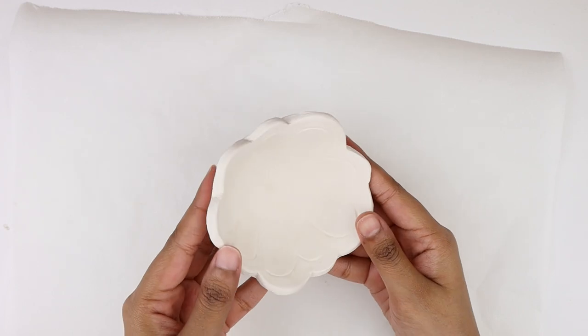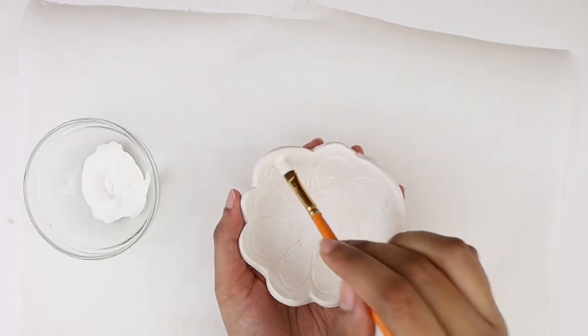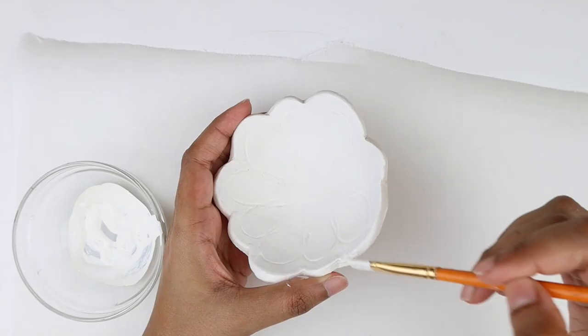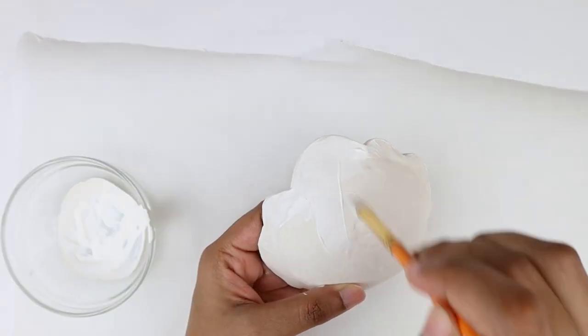After 24 more hours it is now completely dry, so I'm painting it with white acrylic paint. I'm going to go for two coats to make the paint look flawless. I'm also painting the edges and back side of the bowl.